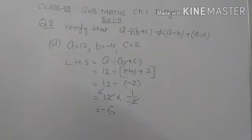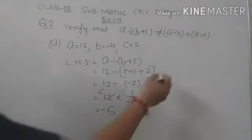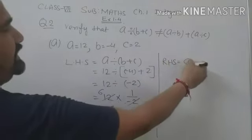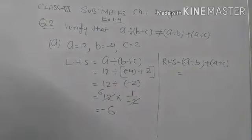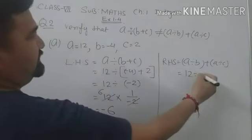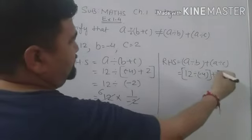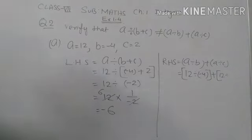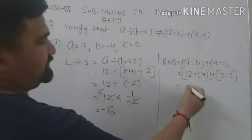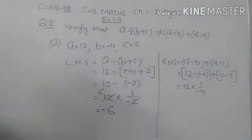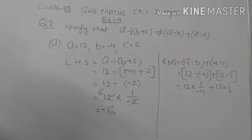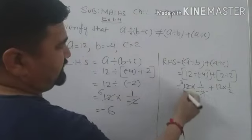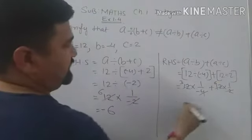Now we solve RHS side. RHS is A divided by B plus A divided by C. Put the values: 12 divided by minus 4, plus 12 divided by 2. Now solve these: 12 into 1 upon minus 4, and 12 into 1 upon 2. Cancel out — 4 times 3 is 12, 2 times 6 is 12 — it gives minus 3.